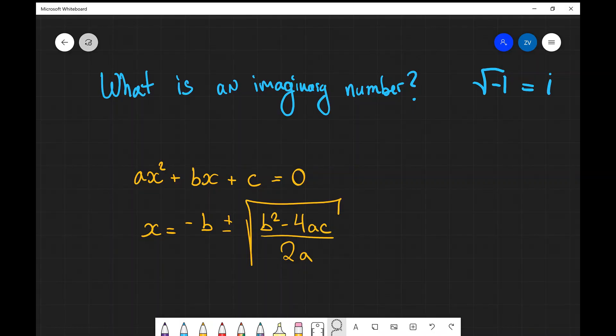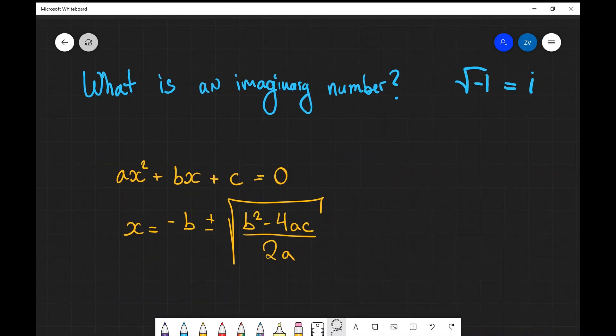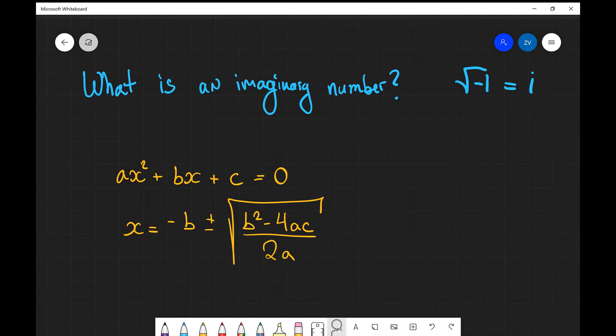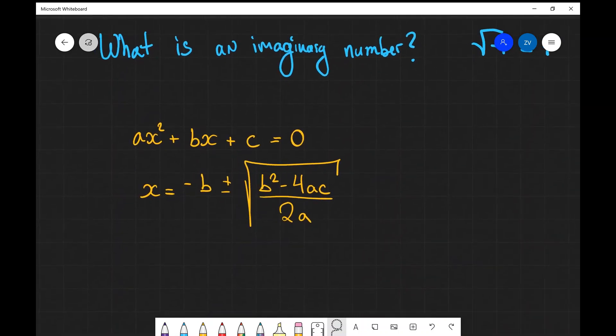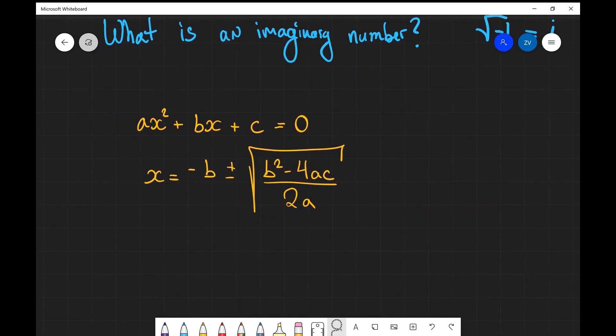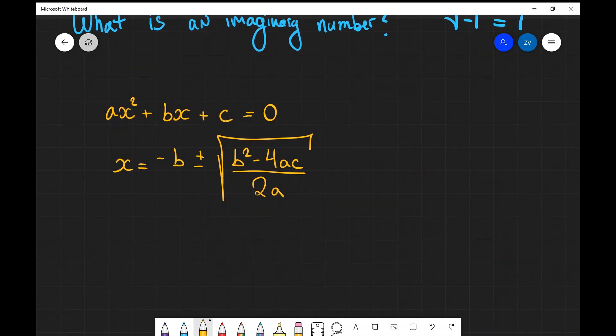Okay folks, so let's have a look at a practical example of what an imaginary number is. As we said, they're defined as the square root of negative one is equal to i. Well let's look at the good old quadratic equation formula: ax squared plus bx plus c is equal to zero, and as we've studied in school the roots of this equation are given by minus b plus or minus the square root of b squared minus 4ac all over 2a.